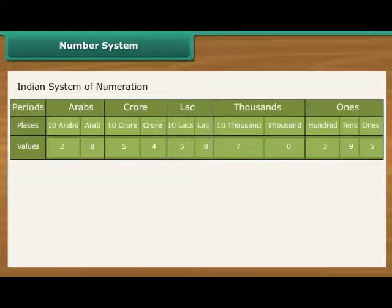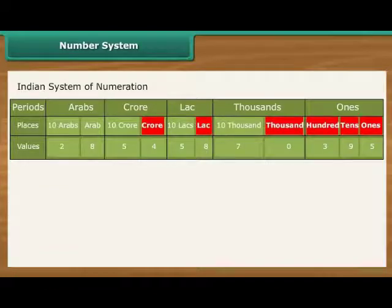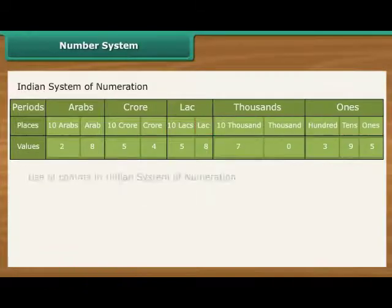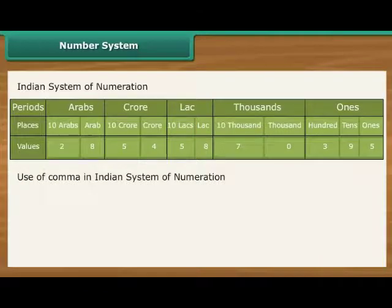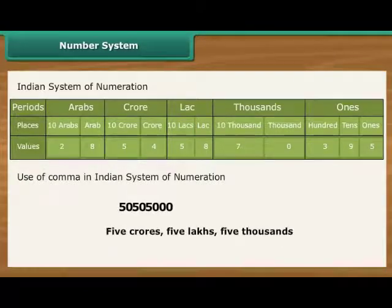Number system. In our Indian system of numeration, we use ones, tens, hundreds, thousands, and then lakhs and crores. Commas are used to mark thousands, lakhs and crores. The first comma comes after hundreds place, three digits from the right and marks thousands. The second comma comes two digits later, five digits from the right. It comes after ten thousands place and marks lakh. The third comma comes after another two digits, seven digits from the right. It comes after ten lakh.